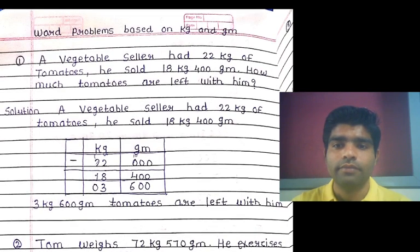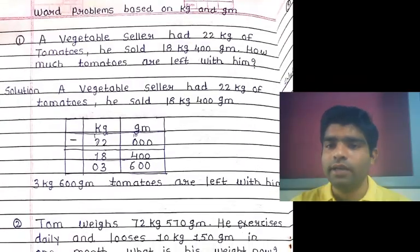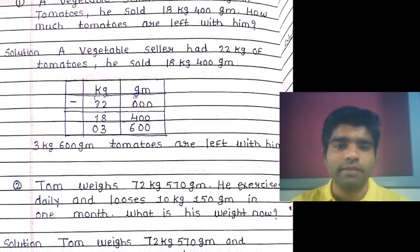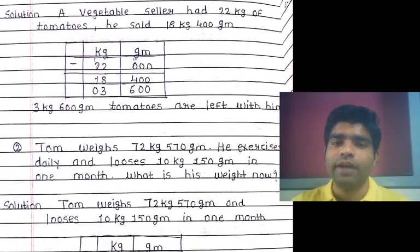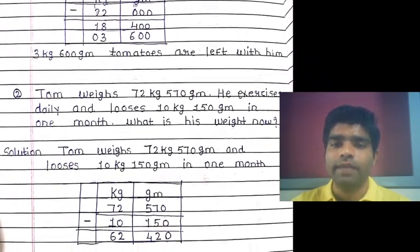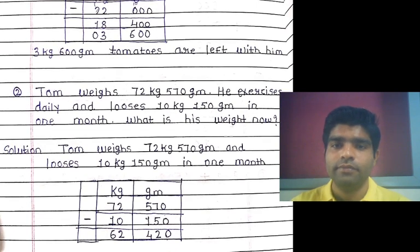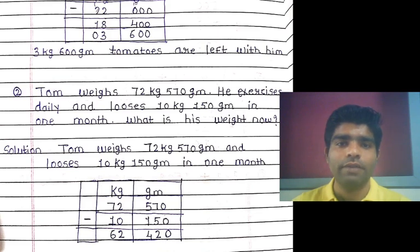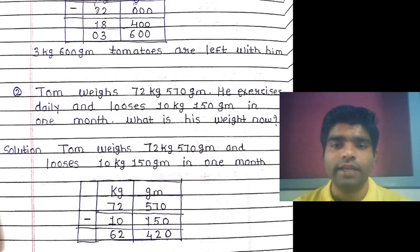Now the next example, example three: Tom's weight is 72 kg 570 grams. He exercised daily and lost 10 kg 150 grams in one month. What is his weight now? First of all, write down the given condition. The given weight of Tom is 72 kg 570 grams, and the loss of weight is 10 kg 150 grams.